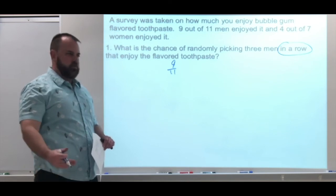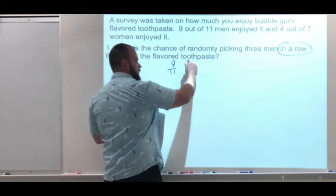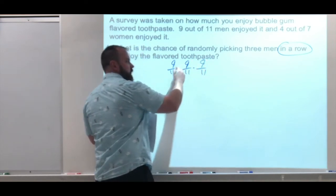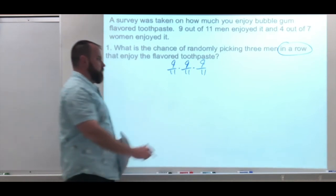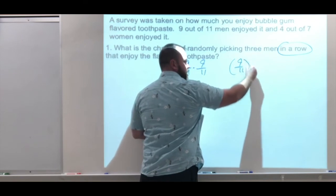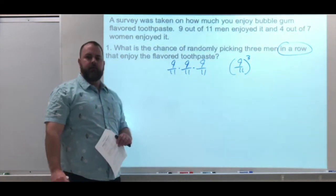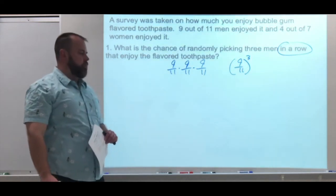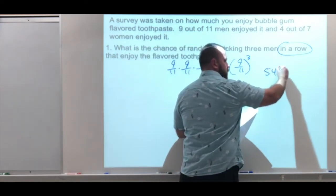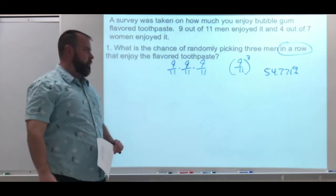We just want that first person is 9 out of 11. Our next event, it has no effect on it. So it's going to stay, 9 out of 11, 9 out of 11 for the third, and we're just on multiply right across. Another way you could have plugged this in, 9 out of 11 to the third power. Just make sure you keep that fraction when you're plugging it in, you use those parentheses. For this, I have 54.771%.